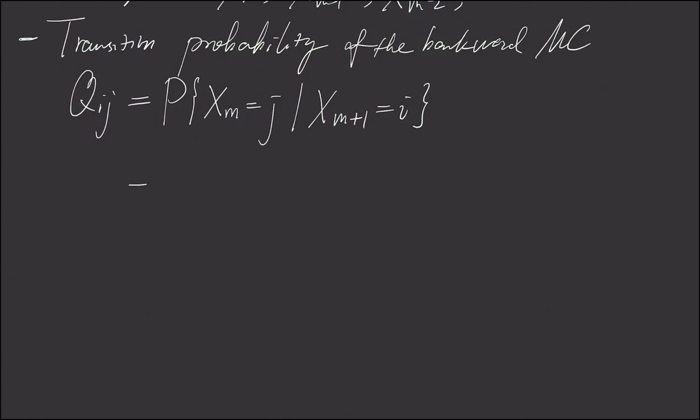By definition, here we use a conditional probability distribution definition. And we have, this is x_m is j and x_m+1 is i divided by x_m+1 is i.